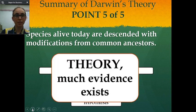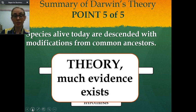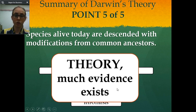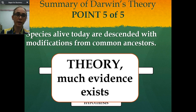The fifth point of Darwin's theory — that species alive today are descended with modifications from common ancestors — is a theory. We cannot observe that in real time because we're talking about events that occurred millions and millions of years ago. We can see evidence of it in our DNA and in the fossils we discover. We can put together a lot of information all pointing in the same direction. But it's never something we're going to be able to observe within our lifetime.